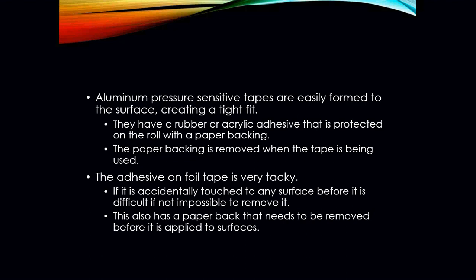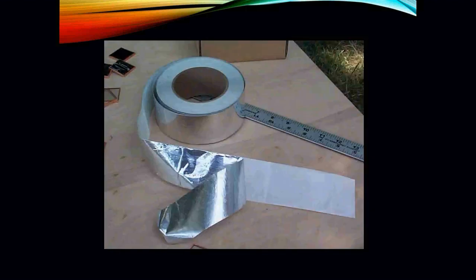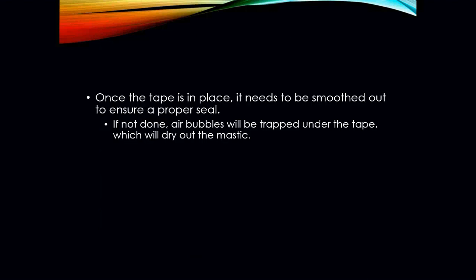The tape also has a paper backing that needs to be removed before it is applied to the surface. Once the tape is in place, it needs to be smoothed out to ensure a proper seal. If not, air bubbles will be trapped under the tape, which will dry out the mastic, causing the tape to become brittle and eventually fall off.